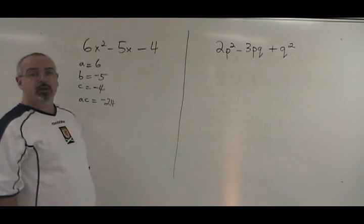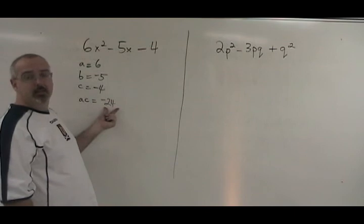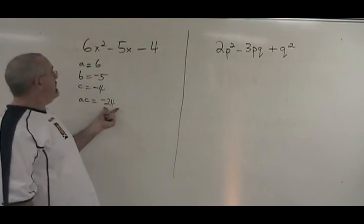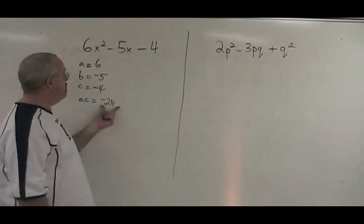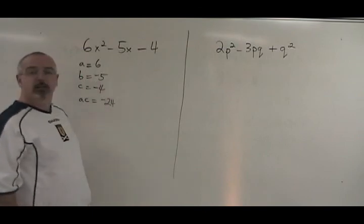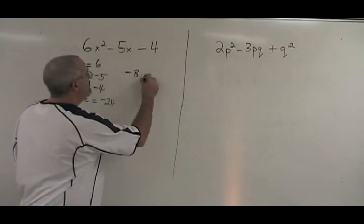Our question has changed a little bit. What two numbers multiply to give ac instead of just c, but still add to give b? In this case, what two numbers multiply to give negative 24 and add to give negative 5? They will be negative 8 and positive 3.